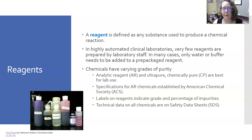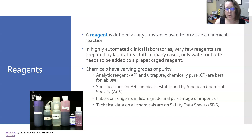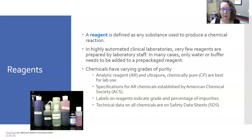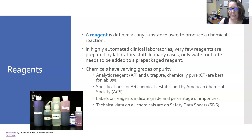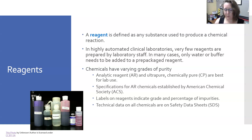Chemicals have varying grades of purity: analytic reagent grade, ultra-pure reagents, and chemically pure reagents — those are all the best for lab use. The specifications for analytic reagent chemicals are established by the American Chemical Society. The labels on the reagents will indicate their grade and a percentage of impurities, and any technical data information can be found on the safety data sheet for that chemical.